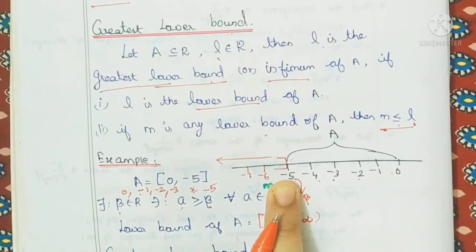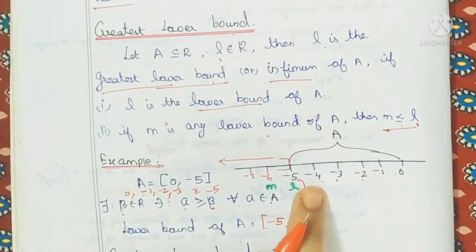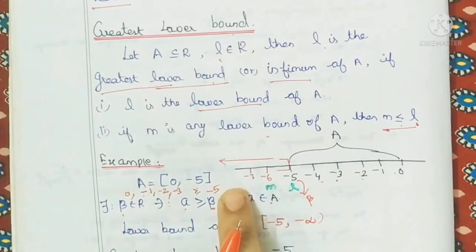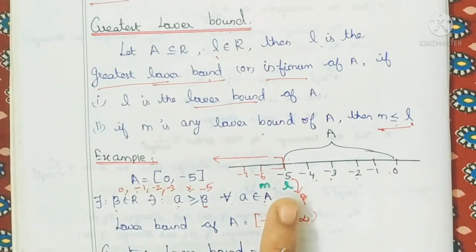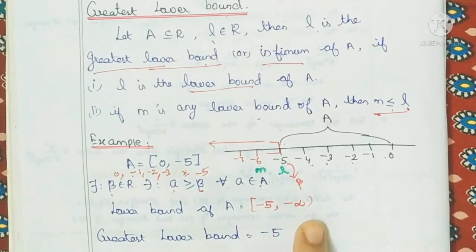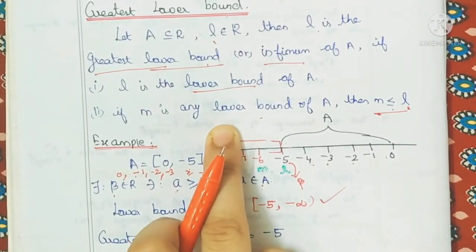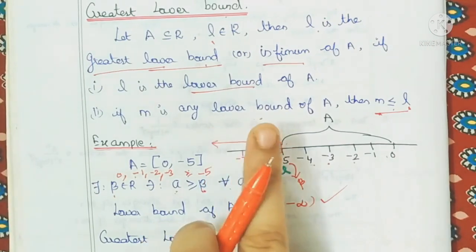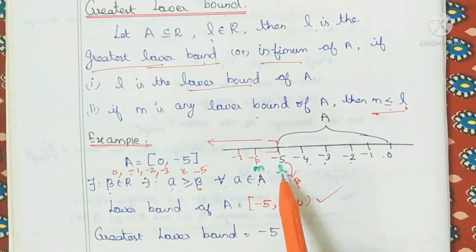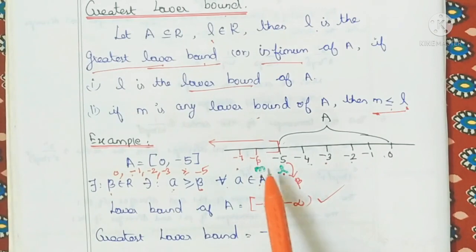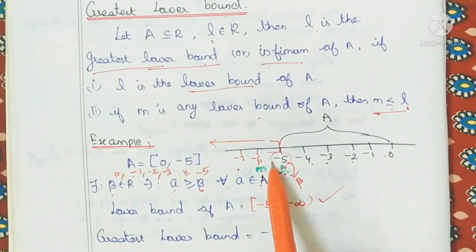So minus 5 is correct for this lower bound. If I look at a negative value less than minus 5 — say minus 6, minus 7 — it will go all the way to minus infinity. So if I set the lower bound, it can be set as minus infinity. Now, the greatest lower bound must be the largest of all lower bounds — so the greatest lower bound here is minus 5.